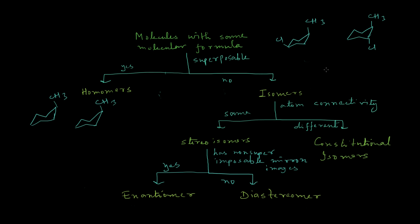But when the connectivity is the same — for example, this chlorine atom is now also in the four position of the cyclooctane ring, just like in the other molecule — the difference is the orientation of the chlorine atom. Here it is in the axial position, but in the other molecule it is in the equatorial position. This type of isomers are called stereoisomers, where the atom connectivity is the same but the orientation is different.